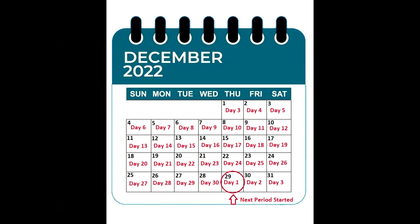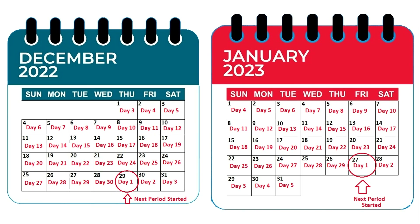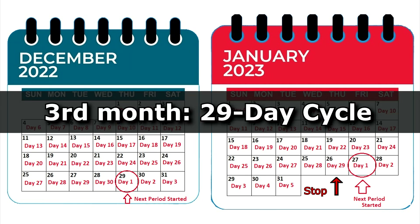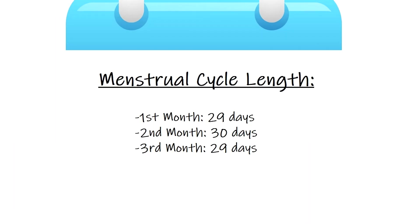Then for the third month, the period started December 29th, which is cycle day one, and we're going to keep counting until January 26th, because this is the day before that next period started. That gives us a cycle length of 29 days. So here's what our results look like: 29 days, 30 days, and 29 days.